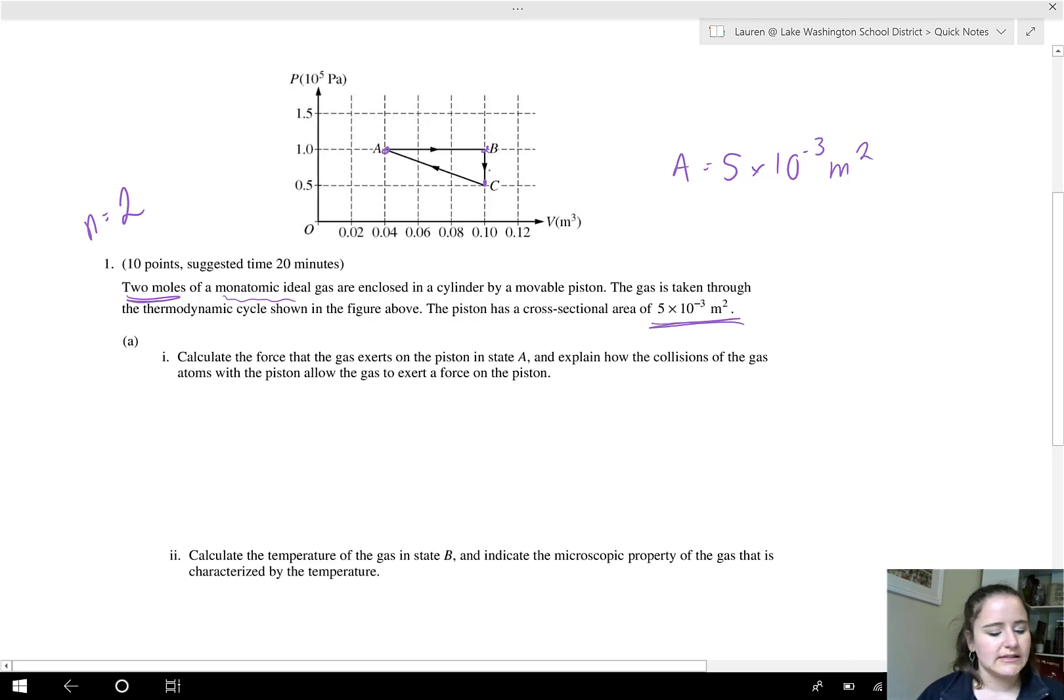Number A1 says calculate the force that the gas exerts on the piston in state A and explain how the collisions of the atoms with the piston will allow the gas to exert a force on it. So first let's go ahead and calculate the force. Remember that pressure is force over area. So if we're talking about the force, we're given the area. That's the equation that we're going to use. We reorganize that and we get that the force equals the pressure times the area.